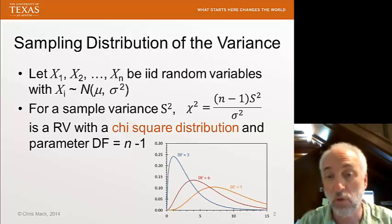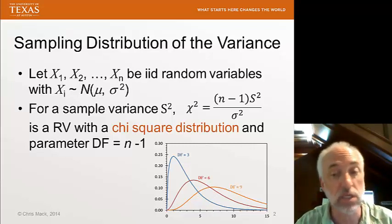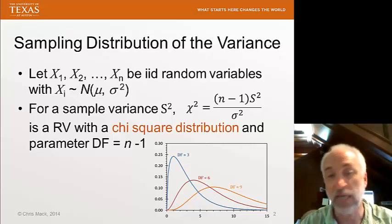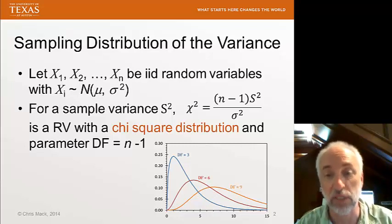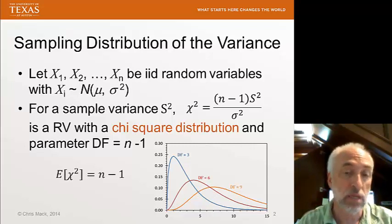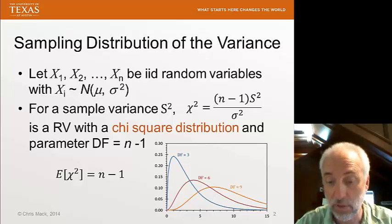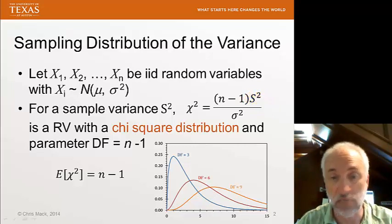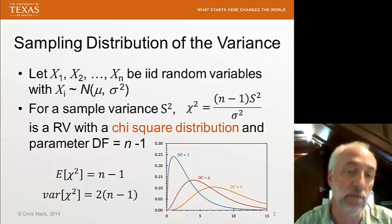We saw before some pictures, some graphs of what that distribution looks like. You see that it's asymmetric. It starts at zero and goes above. You can't have negative degrees of freedom. And it is asymmetric about its mode or mean. The expectation value for chi-square is n minus one. That basically just says the expectation of the sample variance is unbiased. And the variance of chi-square is two times the degrees of freedom.